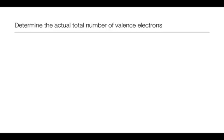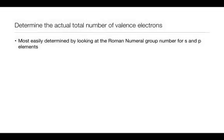The next thing we do is determine the actual number of valence electrons in the molecule. The easiest way to determine how many valence electrons each atom has is simply look at the Roman numeral group number for S and P elements. S and P elements are really the only elements we're going to look at in drawing out Lewis structures.